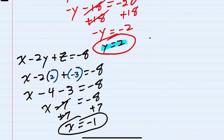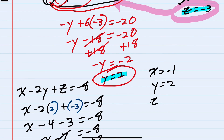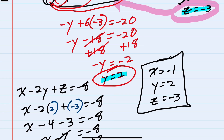So we have x equals negative 1, y equals 2, and z equals negative 3 as our solutions.